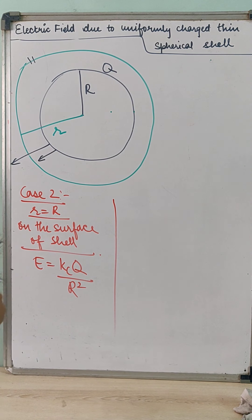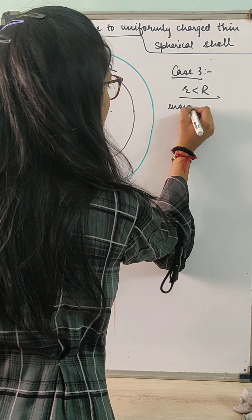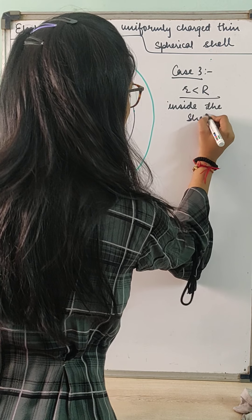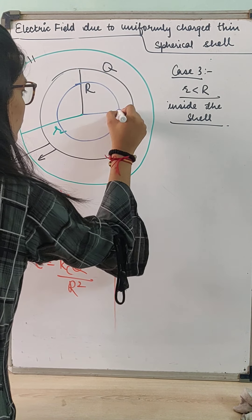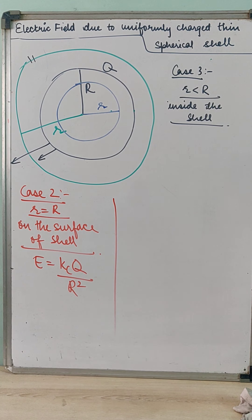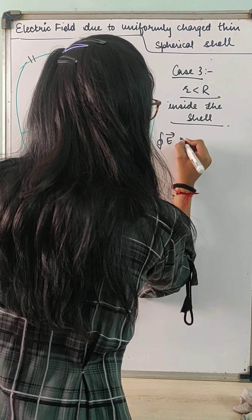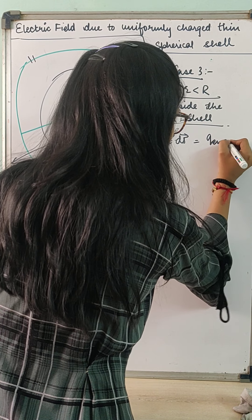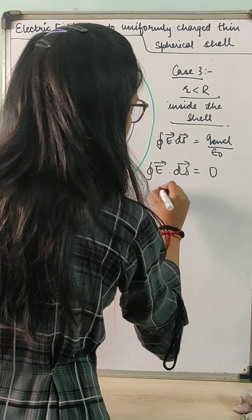The next case, case 3, is when r is less than capital R — the electric field inside the shell. The Gaussian surface now has a radius smaller than R, such that small r is less than capital R. We already know that there is no charge inside the shell, so the charge enclosed within the Gaussian surface is 0. By Gauss's law, E dot ds equals Q enclosed divided by epsilon naught, but Q enclosed is 0, so E dot ds equals 0, which implies E equals 0.